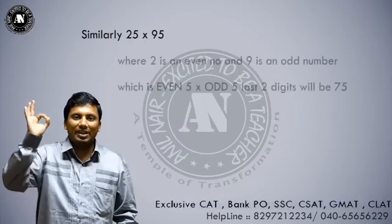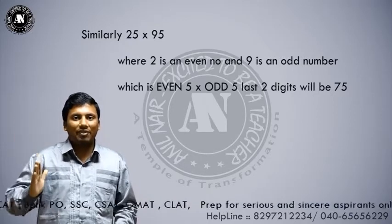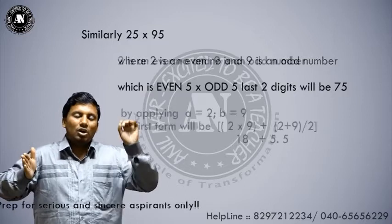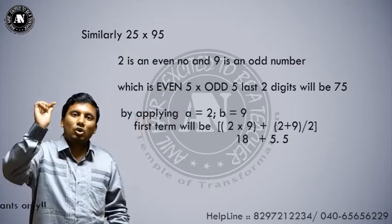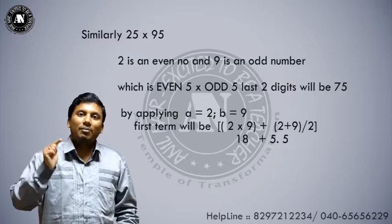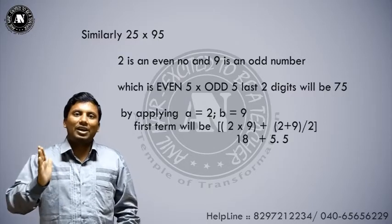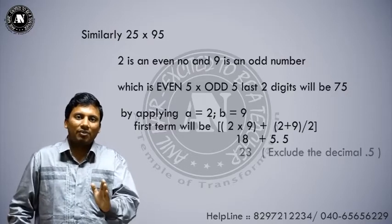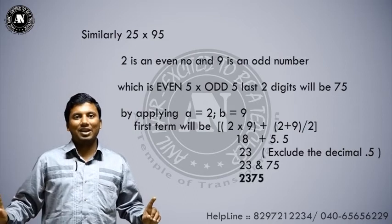Another problem: 25 into 95. Here 2 is even and 9 is odd — even 5 into odd 5 — so the last two digits will be 75. The number before is 2×9 = 18, plus (2+9)/2 = 5.5; we ignore the decimal and write 5, giving 18 + 5 = 23. Answer: 2375.